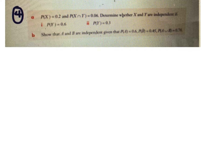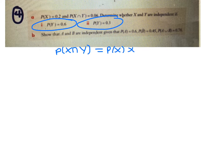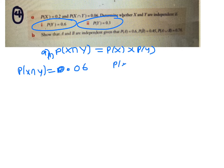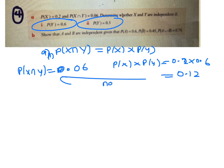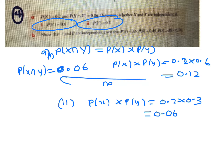Now let's determine whether events are independent or not. The probability of X intersection Y has to equal the probability of X times the probability of Y. The probability of X intersection Y is 0.06, and the probability of X times the probability of Y would be 0.2 times 0.6, which is 0.12. These are not equal, so the first one is not independent. For the second set, probability of X times probability of Y is 0.2 times 0.3, which is 0.06 — the same as the intersection — so yes, the second one is independent.